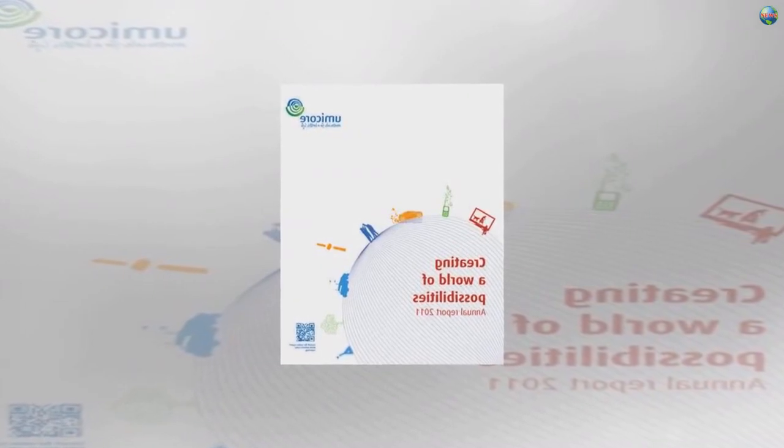June 1, Reuters. Belgium's Umicore said on Friday it had chosen Poland for its first plant in Europe manufacturing cathode materials for electric vehicles.